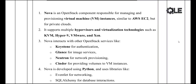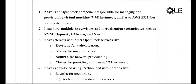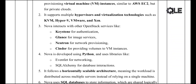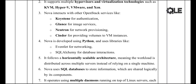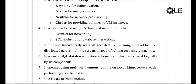Nova supports several virtualization technologies like KVM, Xen, VMware, and Hyper-V. It also supports bare metal servers and has limited support for containers like Docker. On the technology stack side, Nova is written in Python and uses an event-driven model for concurrent networking and SQLAlchemy for database operations.